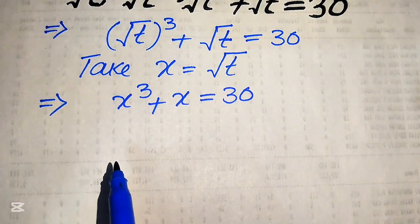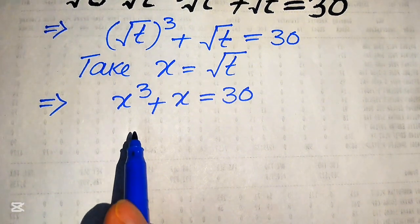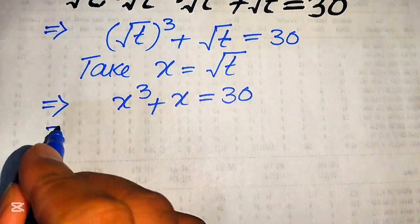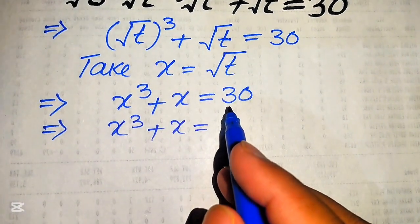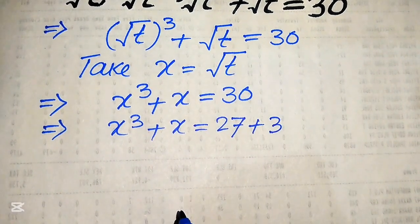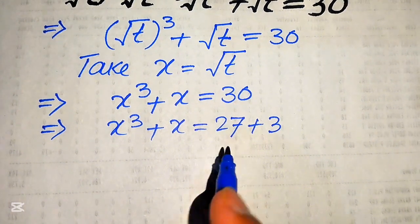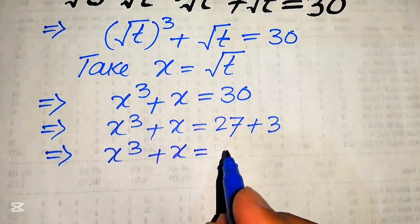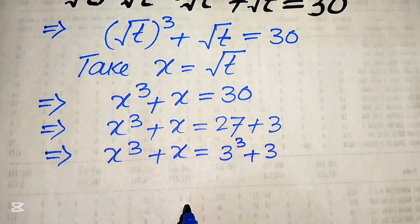Now this equation is a cubic equation in the variable x. Our next goal is to find the values of x first, and after that we move backward to find the value of t. To find the value of x, we focus on the right-hand side and break 30 as 27 plus 3. We write this as x cubed plus x equals 3 cubed plus 3.